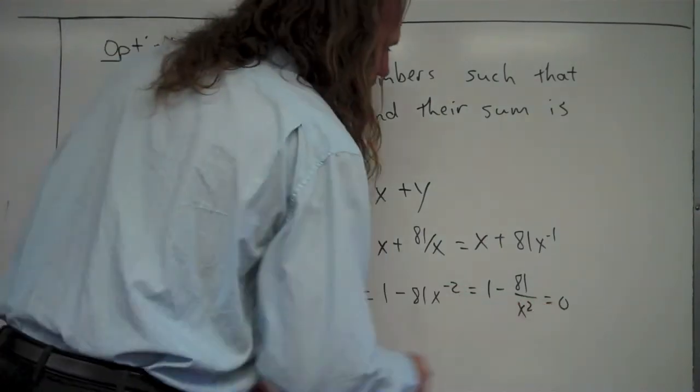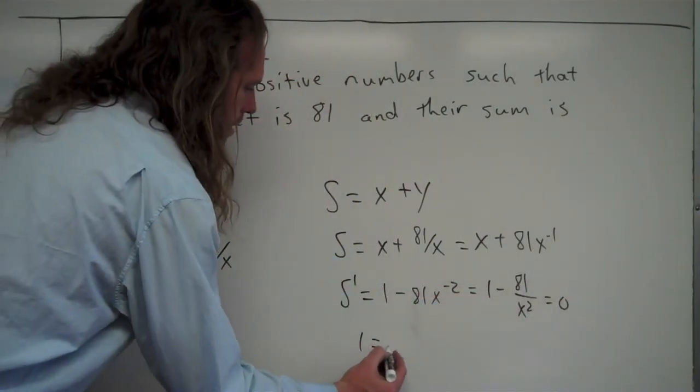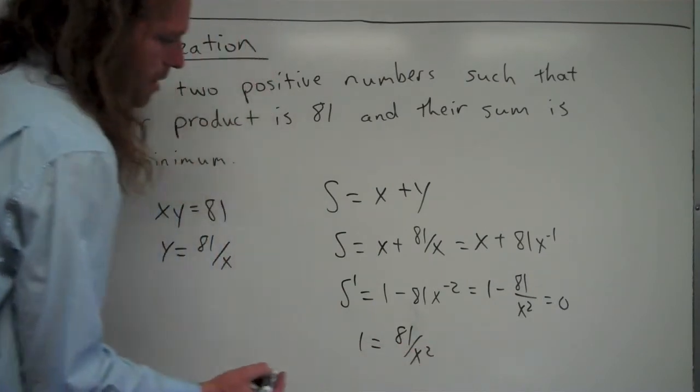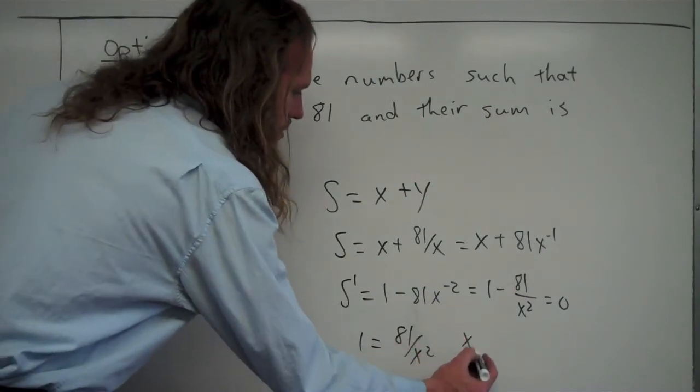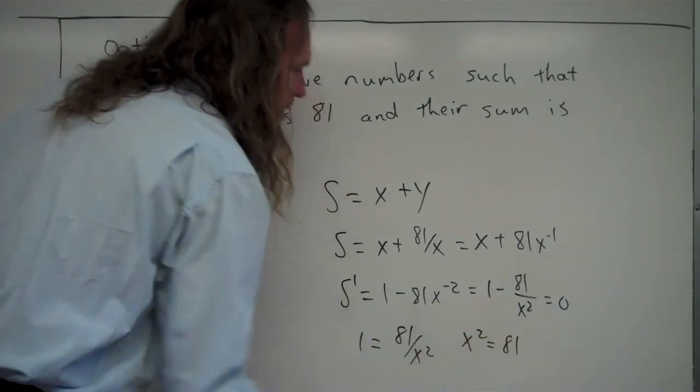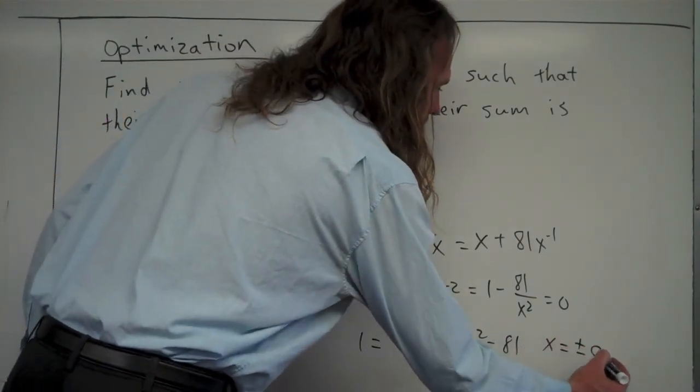So let me see where this actually equals zero. I'll move 81 over x squared to the other side. So 1 equals 81 over x squared. I will then multiply by x squared. So I have x squared is equal to 81. And then I'll take the square root of both sides, and I will get from that x equals plus or minus 9.